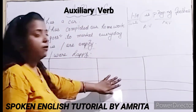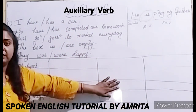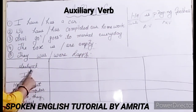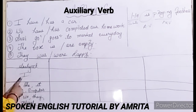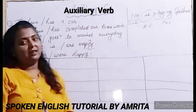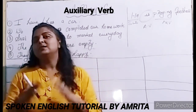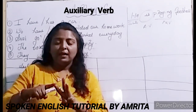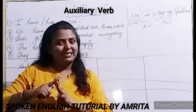Let's discuss this chart for making you confident in auxiliary verb. I have found three groups of subjects. In the first group, there is 'I.' The second is he, she, it — meaning singular. The third is you, we, they — plural. Now, how many types of tenses are there? There are three types: present tense, past tense, and future tense.